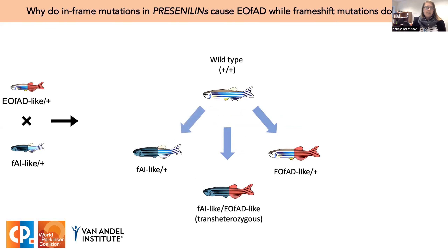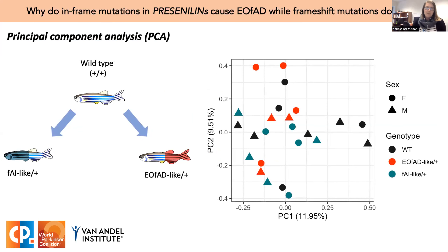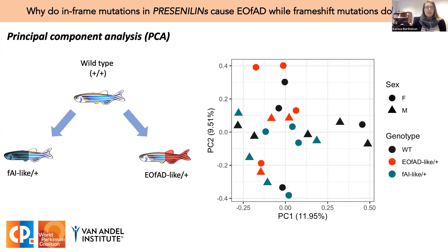Our study design allows comparisons between the wild type fish and the heterozygous mutants. Trans-heterozygous fish with one acne inversa-like and one EOFAD-like allele are also generated, but these don't represent a human disease state and aren't informative for understanding the effects of the mutations, so we don't analyze them. For the results, I first want to show the principal component analysis, or PCA, of the brain RNA-seq data. PCA can be used to explore the overall similarity between samples and where the variation in the data set is coming from.